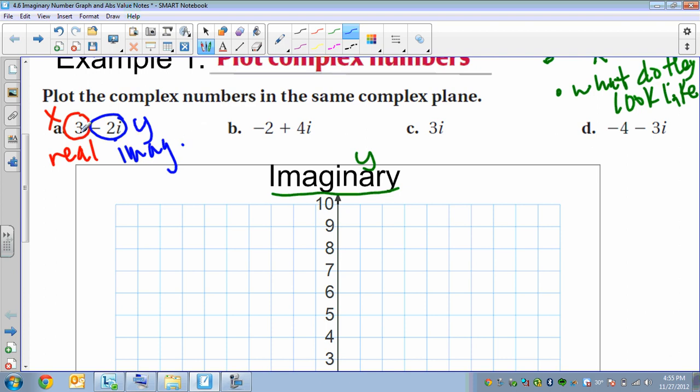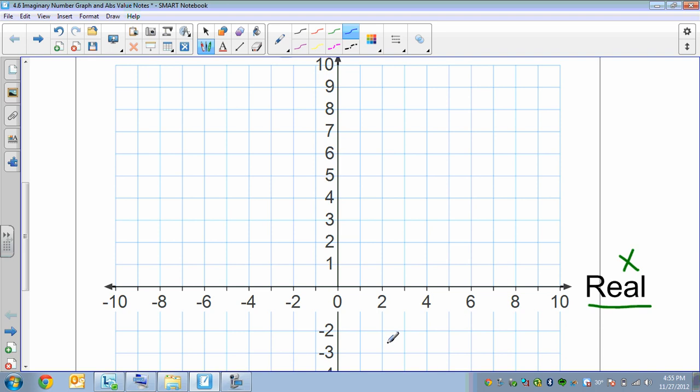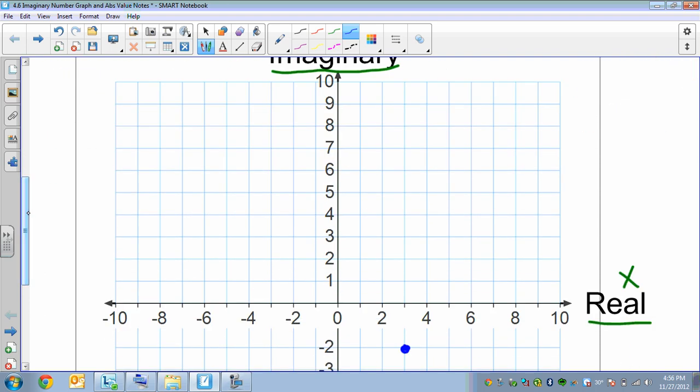So all we do is just plot that point, basically, 3, negative 2. So that's all we're going to do here is we just go over 3 and down 2. Oops. Oh man, and then I missed. Over 3, down 2. And that's it. That's our point. That's that first imaginary number. That's letter A. I'm going to kind of label it as A.